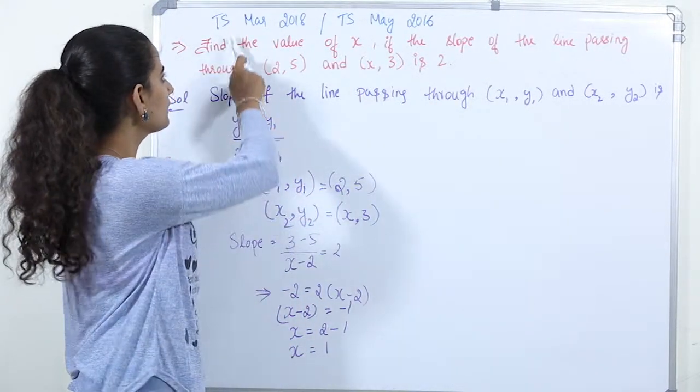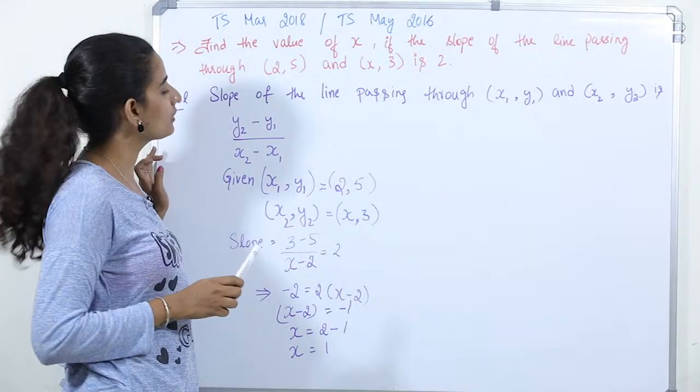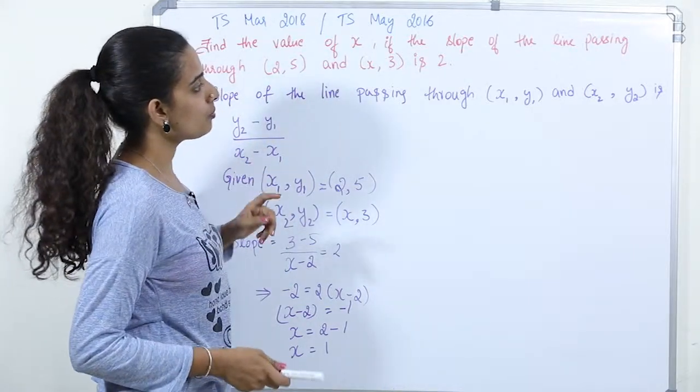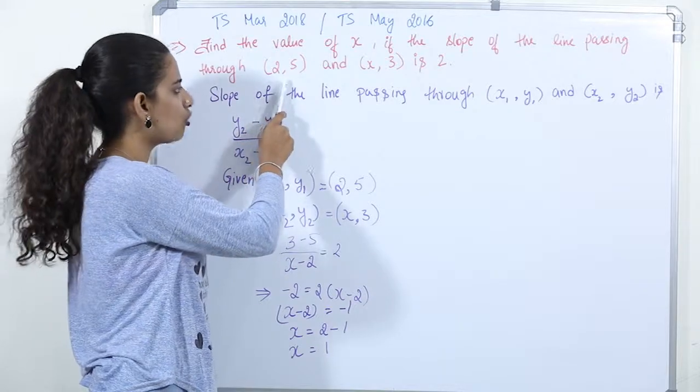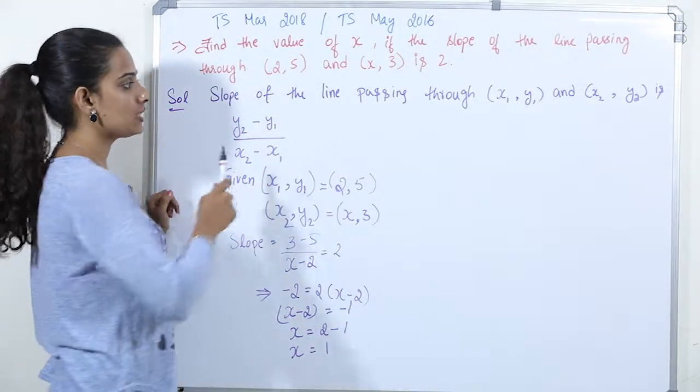This question is in Telangana state March 2018 and Telangana state May 2016 question papers. Question is, find the value of x if the slope of the line passing through (2,5) and (x,3) is 2.